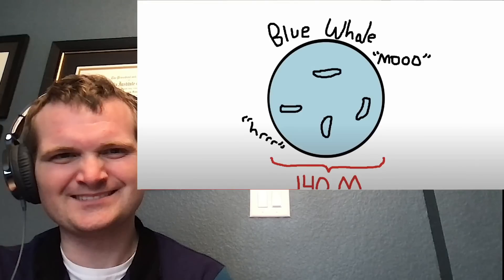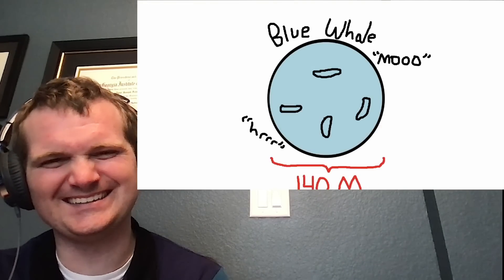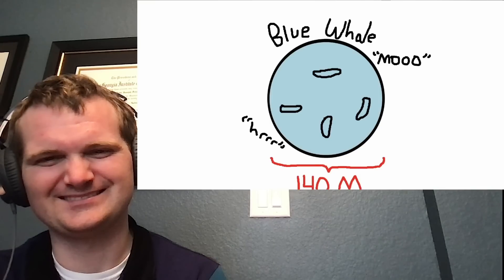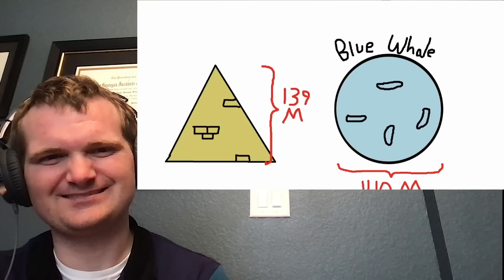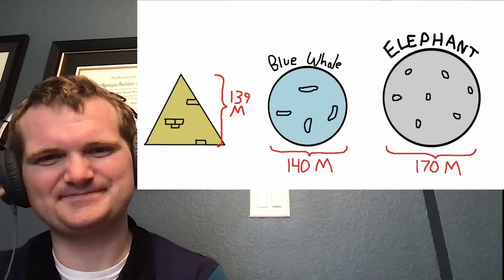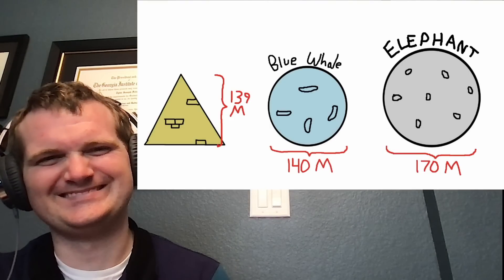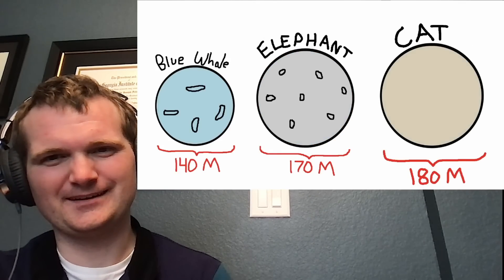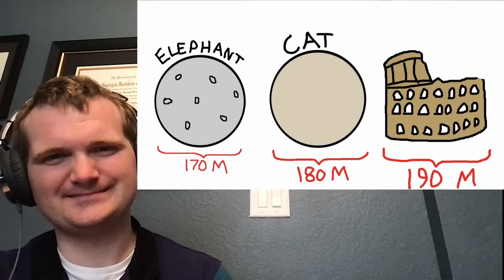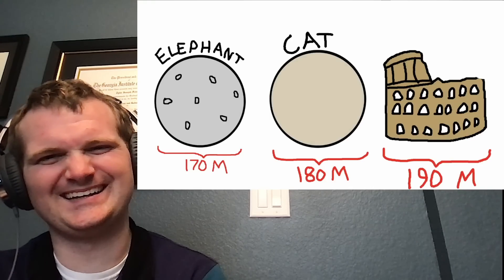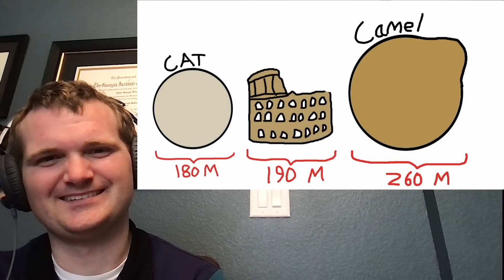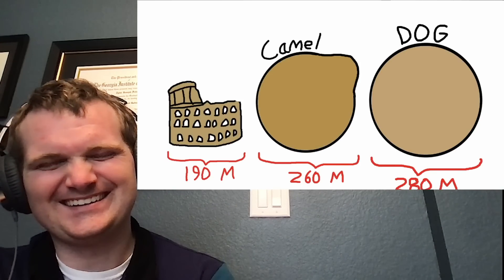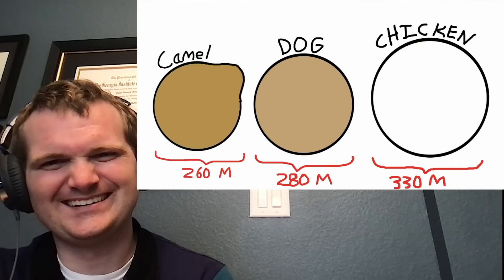First up is the blue whale sphere. Although they are freaking gigantic, there is only like 10,000 of them on Earth. So the sphere only came out to around 140 meters in diameter. That's about the same height as the Great Pyramid. A bit larger than that is the elephant sphere, which came out to around 170 meters. Next up is the domesticated cat sphere at around 180. That's only slightly smaller than the Roman Colosseum, which was 190 in diameter. Next up is the camel sphere at around 260 meters. Slightly larger was the domesticated dog sphere at 280. Then the chicken sphere at 330.